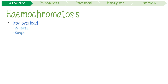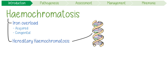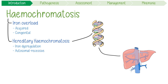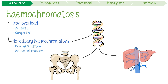In medicine, the term actually refers to iron overload in general — think of acquired and congenital causes. But this video is specifically about hereditary hemochromatosis, which refers to a genetic form of the disease caused by iron dysregulation and absorption. It's usually an autosomal recessive disorder that primarily affects the liver and joints, and it's highly prevalent in white populations — so much so that it's known as the Celtic curse in northern Europe.